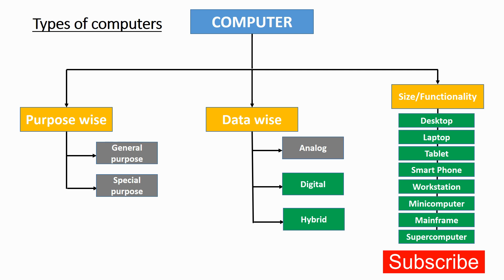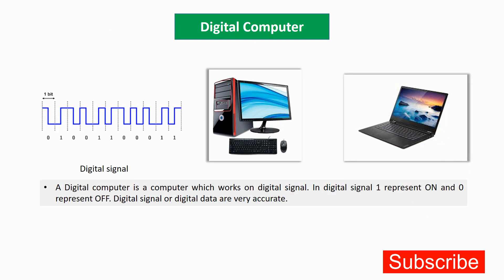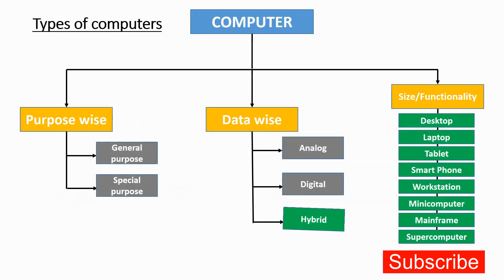The next type is the digital computer. The general purpose computers we discussed — desktops and laptops — are normally digital computers. A digital computer works on digital signals where one represents on and zero represents off. Digital data is very accurate. All the gadgets we are using today are in the digital era and are digital computers.